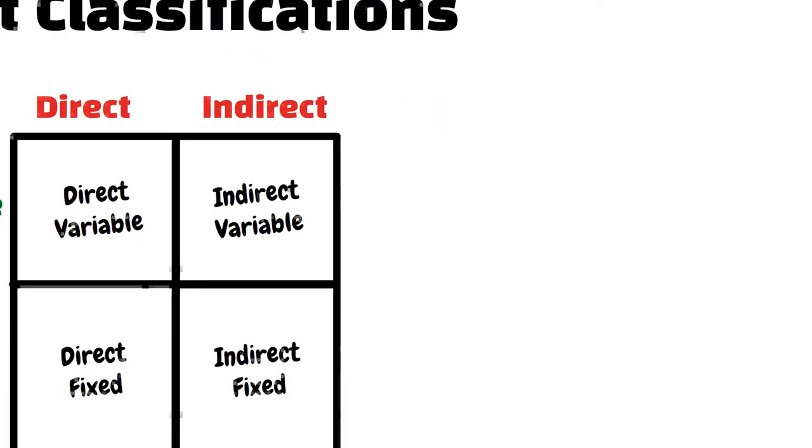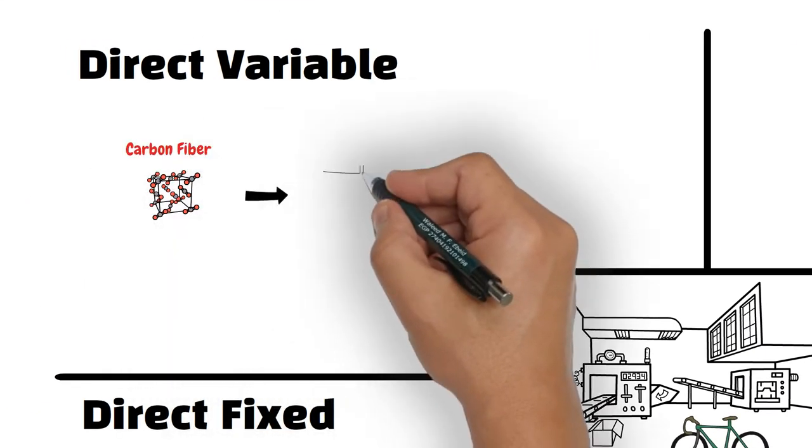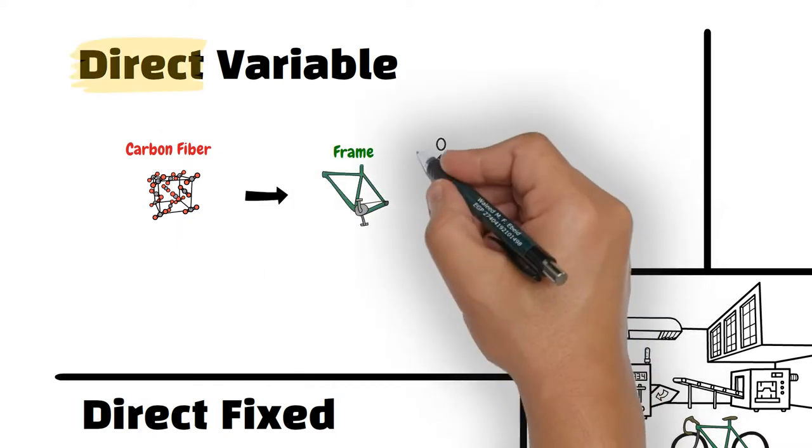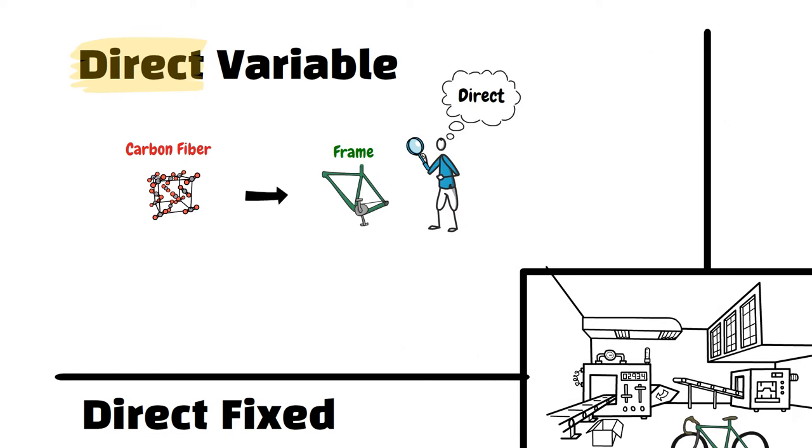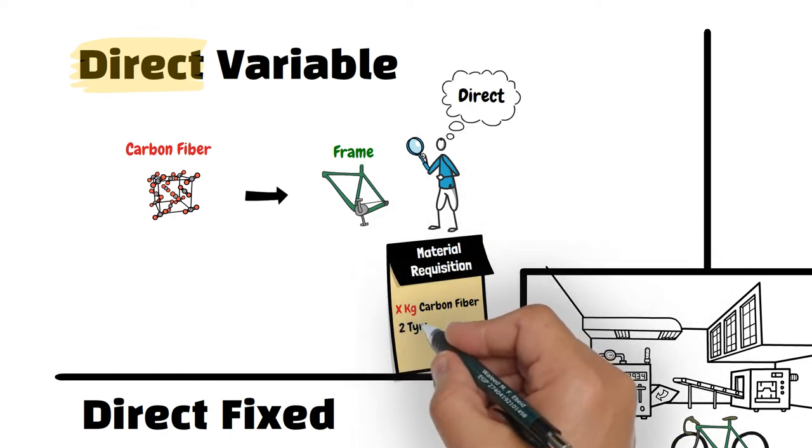Say we have a factory that is producing road bikes. The carbon fiber material used in producing the bike frames is a direct-variable cost. It is a direct cost because the carbon fiber can be easily traced to the bike. In other words, each bike frame requires x kilograms of carbon fiber.